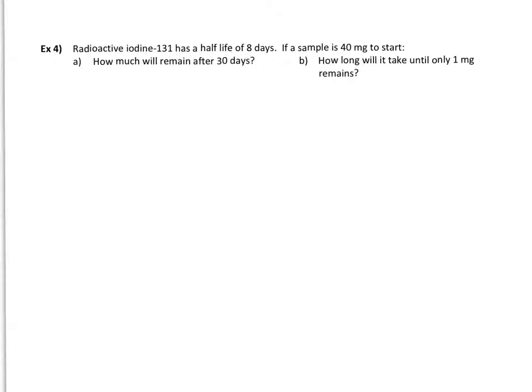Radioactive iodine has a half life of eight days, it means every eight days, it's going to cut its mass in half. So if we start at 40 milligrams, eight days later, we should have 20 milligrams. And then eight days after that, we're down to 10 milligrams. And eight days after that one, we're down to five milligrams and so on. So how much will remain after 30 days? So I'm going to use M for mass. That does not look like M, M for mass. We start with an initial mass of 40 grams, or sorry, 40 milligrams, and we're cutting it in half.